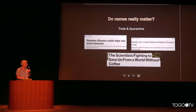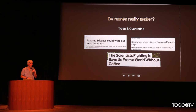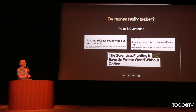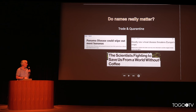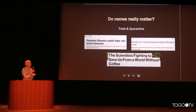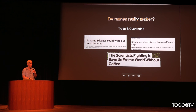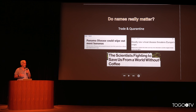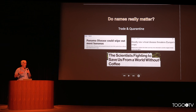Another case where names are important is in trade and quarantine. Plant protection agencies throughout the world are very concerned about diseases moving around. For example, Panama disease affecting bananas, rust affecting wheat, and another rust affecting coffee. Regulatory agencies that look at trade have lists of names to check whether these organisms are being introduced into countries, so these names have to be correct and up to date.